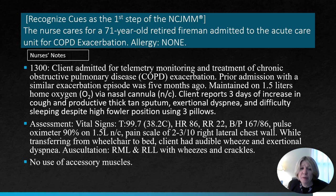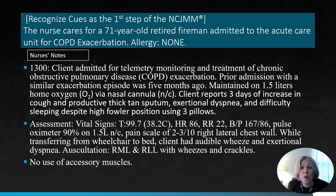Prior admission with a similar exacerbation episode was five months ago. He's maintained on 1.5 liters of home oxygen by nasal cannula. The client reports three days of increases in cough, increases in productive thick tan sputum, increases in exertional dyspnea — just walking to the bathroom gets him short of breath — and difficulty sleeping despite high Fowler's position using three pillows. Vital signs: temperature 99.7, heart rate 86, respiratory rate 22 (normal is 10–20), blood pressure 167/86, and pulse oximeter reads 90% on 1.5 liters nasal cannula.